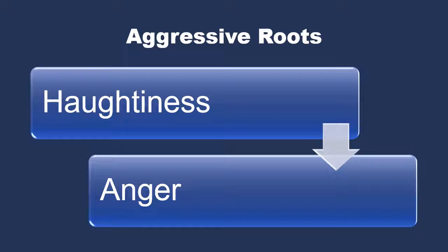Another aggressive root of bitterness is anger. Anger is an intense emotion. It involves a strong, uncomfortable, and hostile response to a perceived threat or hurt. Anger can occur when a person feels their boundaries are being violated. Modern psychologists view anger as a primary, natural, and mature emotion experienced by virtually all humans at times, and as something that has functional value for survival.